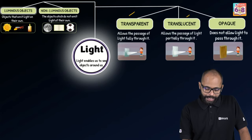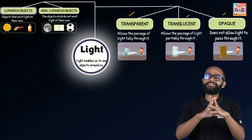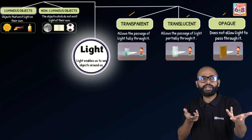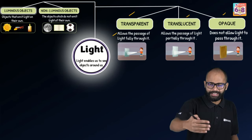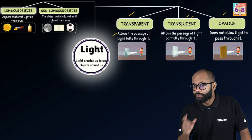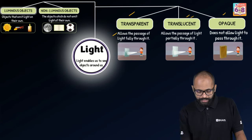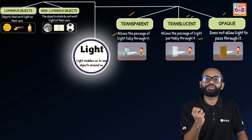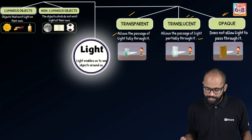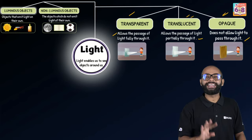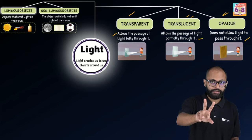There are three types of objects in terms of how much light they allow to pass through them. Transparent objects allow light completely to pass through them, like glass. Translucent objects — like butter paper — partially allow light to pass through; you can see something is behind the screen but don't know exactly what. Opaque objects do not allow light to pass through them at all. These three differentiations are made on the basis of how much light they allow to pass through — very important to understand.